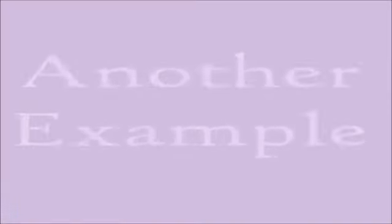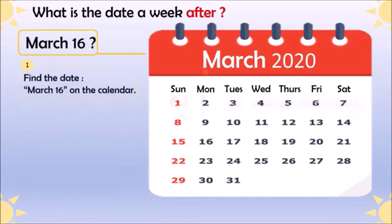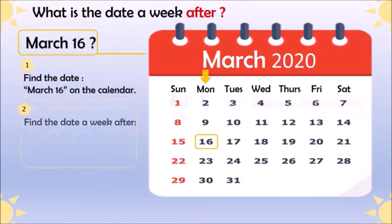Now let's take another example. The date here is March 16. Let's find March 16 on the calendar — yes, it's here on Monday. Now the second step is to find the date that's a week after.